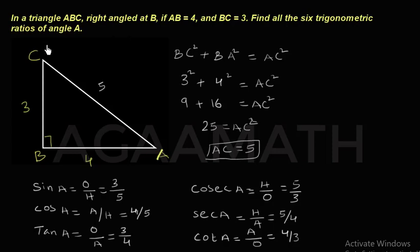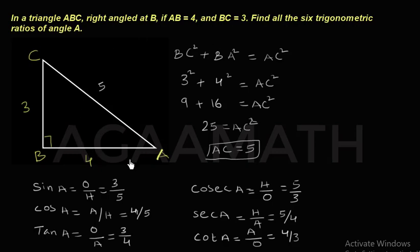In the previous video we learned when all three sides are given. But in this video we had to find one side using the Pythagorean theorem first, and then find all six trigonometric ratios. Thank you all.